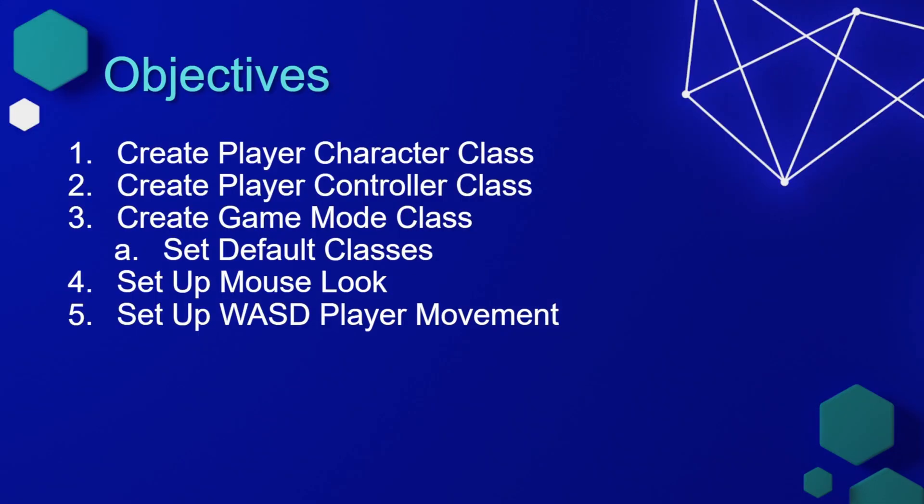The first step is we're going to create our player character class. Then we'll set up a player controller class. The third step will be to create our game mode class and then set up the default classes in our game mode class. The fourth step will be to set up mouse look, and the final step will be to set up the WASD player movement.